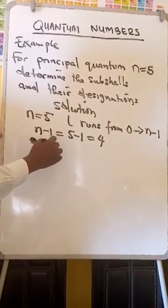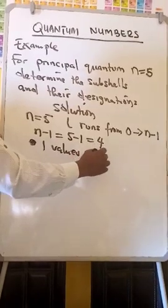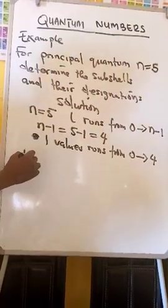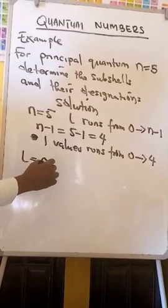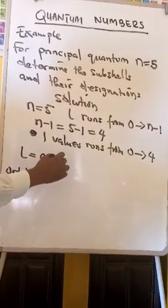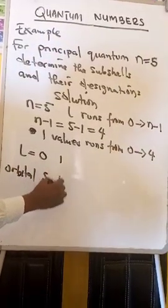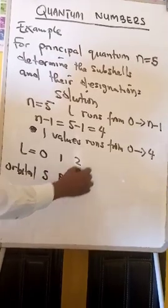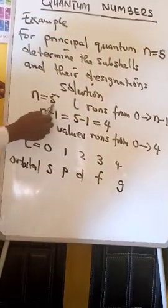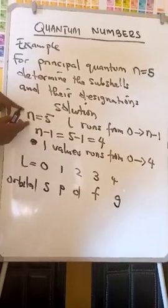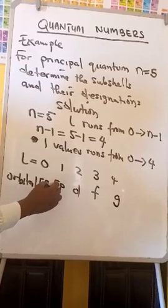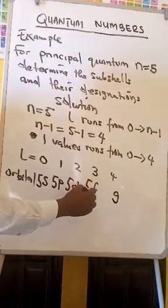So for L equal to 0, the orbital is S. For L equal to 1, the orbital is P. For L equal to 2, the orbital is D. For L equal to 3, the orbital is F. For L equal to 4, the orbital is G. The n value of 5 gives us the energy level of these orbitals.